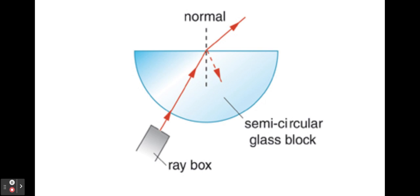One other shape we need to be aware of is a semicircular block. As the light ray passes through, provided it's directed at a point midway along the flat surface at the back of the block, it will always hit the curved surface at 90 degrees — therefore there is no change in direction as it enters because it arrives along the normal. As it leaves the block, the light ray bends away from the normal, and we can again indicate the angle of incidence and angle of refraction.